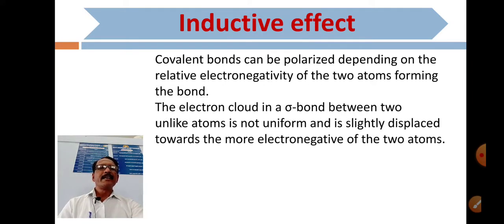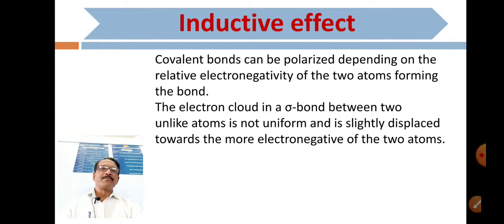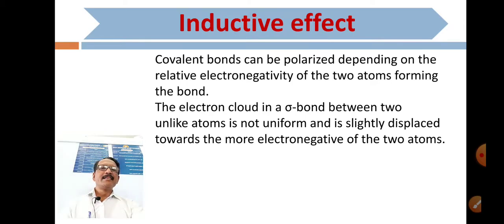The electron cloud in a sigma bond between two unlike atoms is not uniform. It is slightly displaced towards the more electronegative of the two atoms.